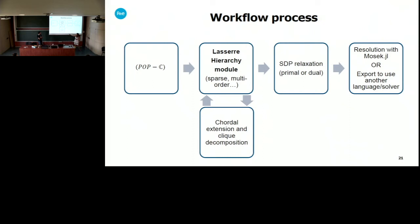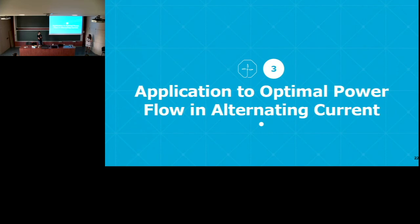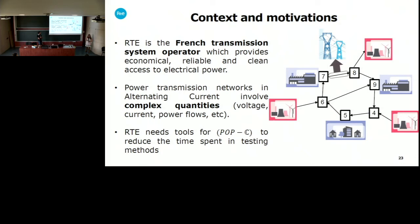There is a lot of work to do here to improve the resolution, and we are currently working on this part. Now I'm going to present an application to optimal power flow in alternating current. We are working for RTE, the French Transmission System Operator, which needs tools for polynomial optimization in complex numbers because alternating current modeling involves complex quantities: the voltage, the current, the power flows. Having such a tool would permit reducing the time spent in testing methods.